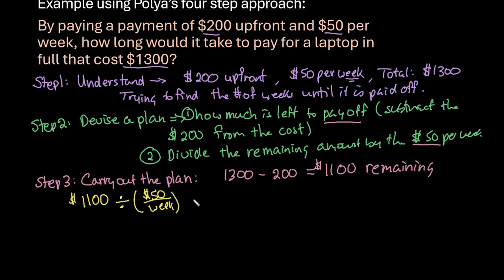Technically, you don't have to put it this way, we want units of week at the top. So remember that when you're dividing by a fraction, technically, this is a fraction because it's $50 per one week. So when you divide by a fraction, you're actually multiplying by the reciprocal. So we would do $1,100 times one week per $50. So we're technically dividing by the 50, and then the weeks ends up on the top. So we have the units that we want.